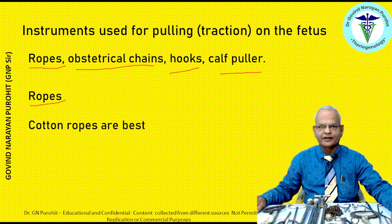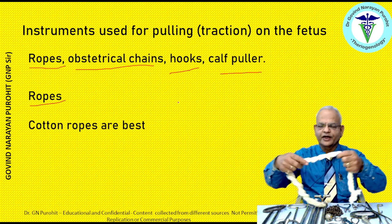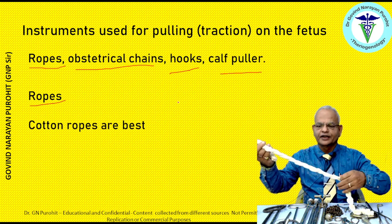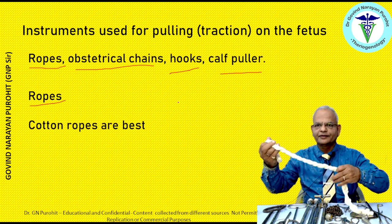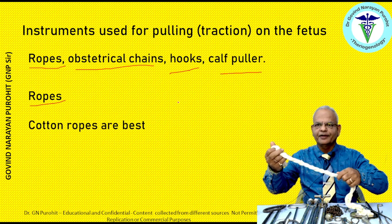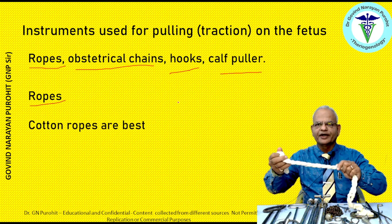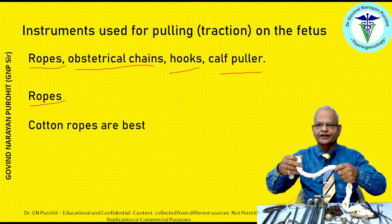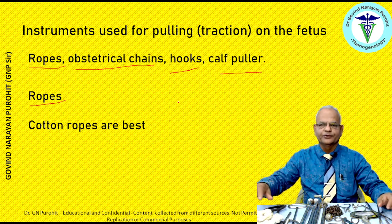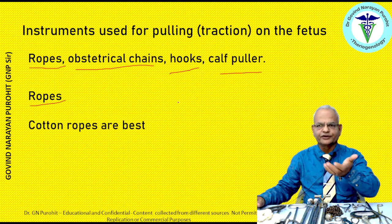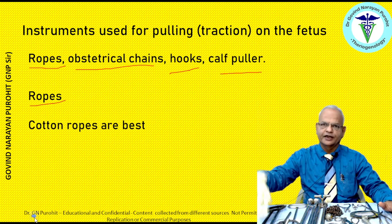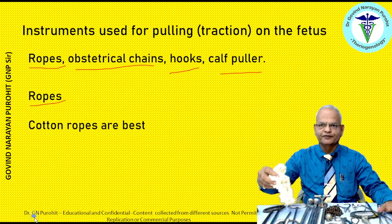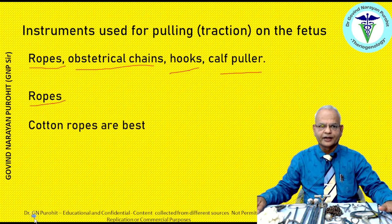The cotton rope, as you can see this one — cotton ropes are always better because they do not slip. Nylon ropes may sometimes be used but they are slippery and may cause abrasion on the fetus and on the uterine wall. Ropes made of jute are not advisable because they can abrade the birth canal and cause abrasions on your hand. Cotton ropes are always the best and can be pre-sterilized and kept for use during obstetrical operations.